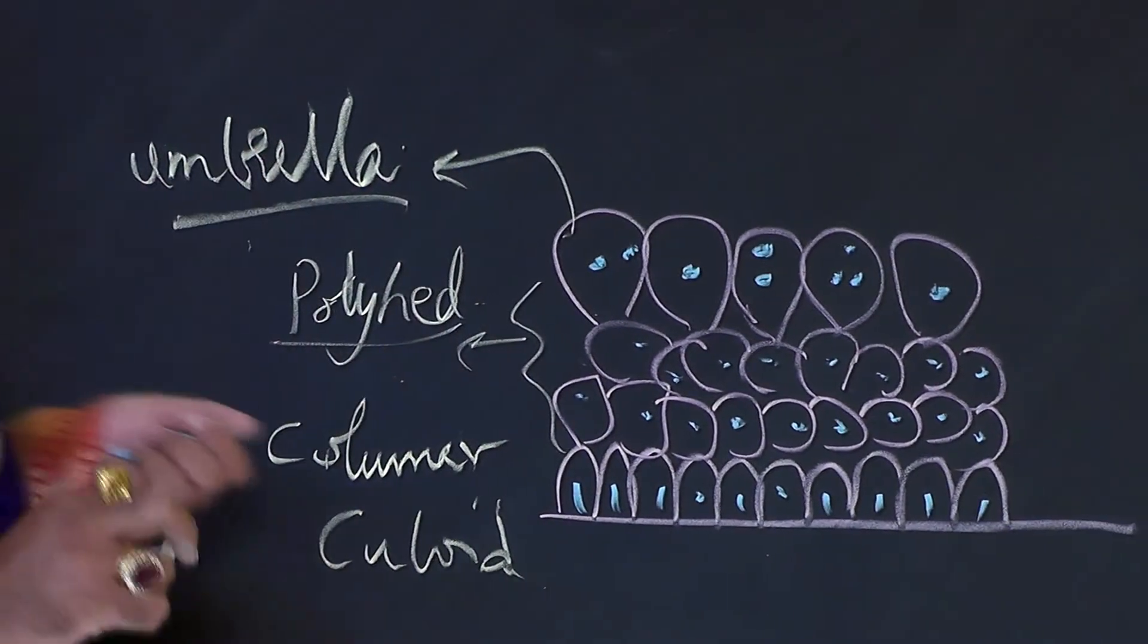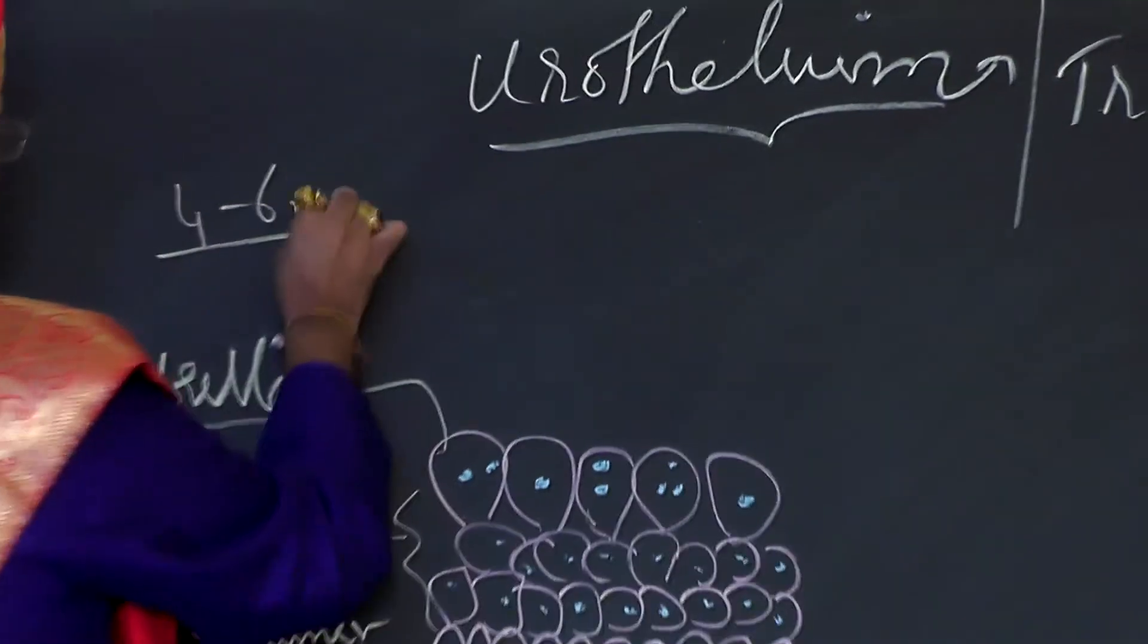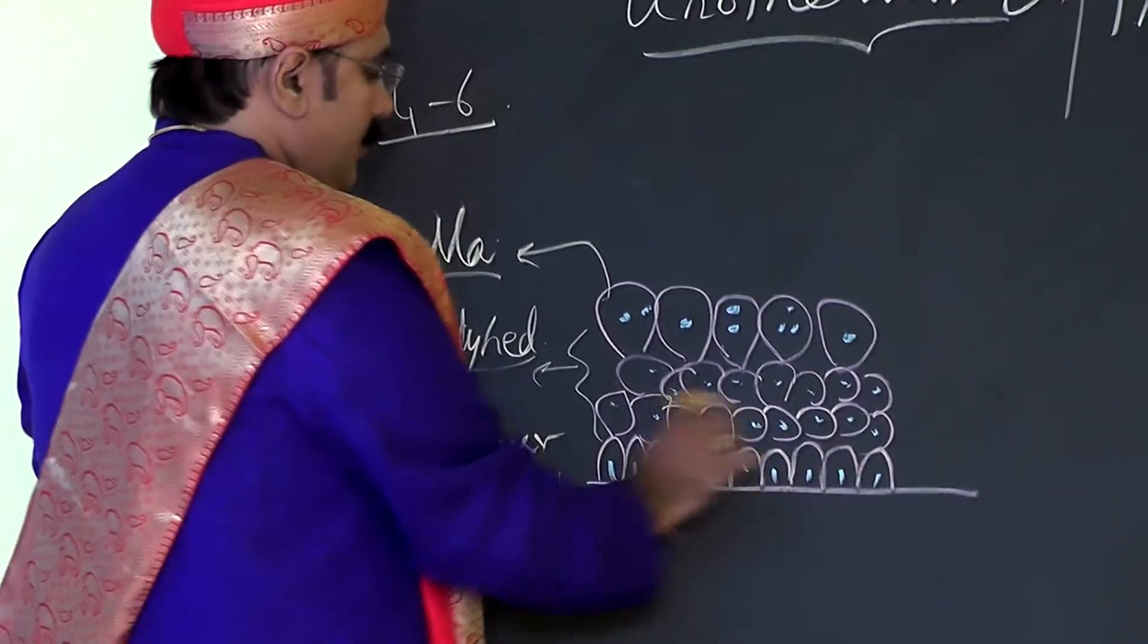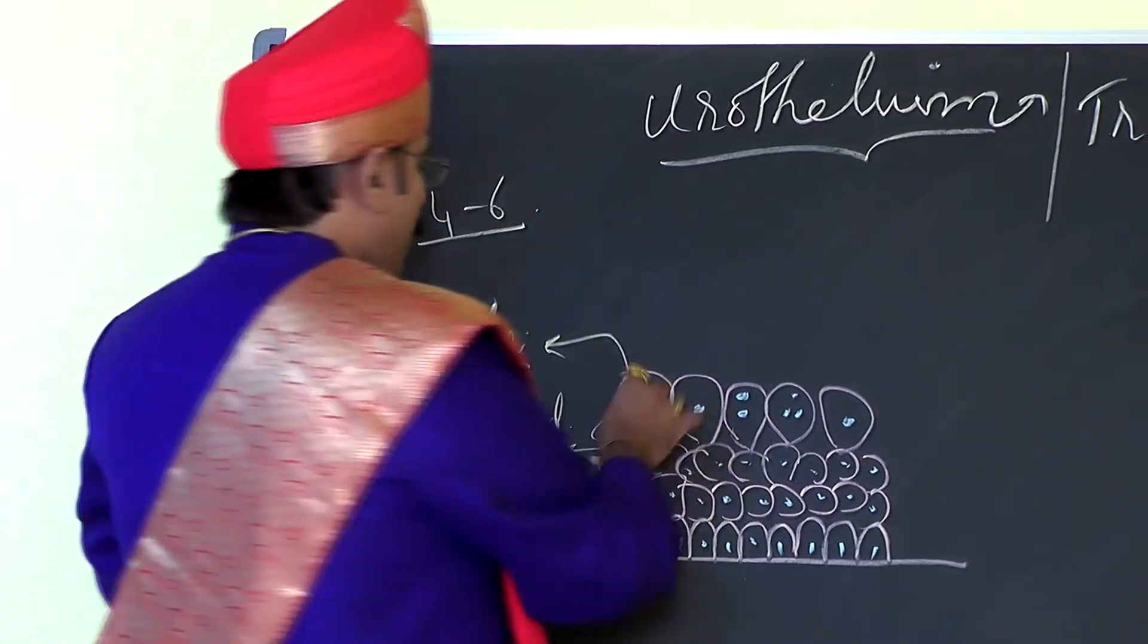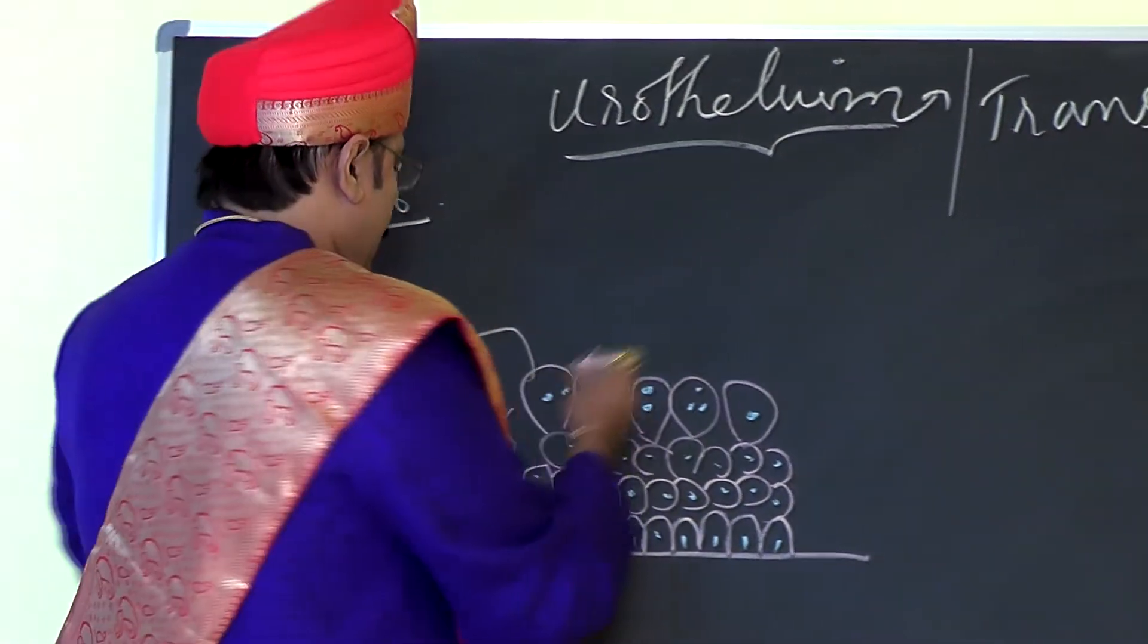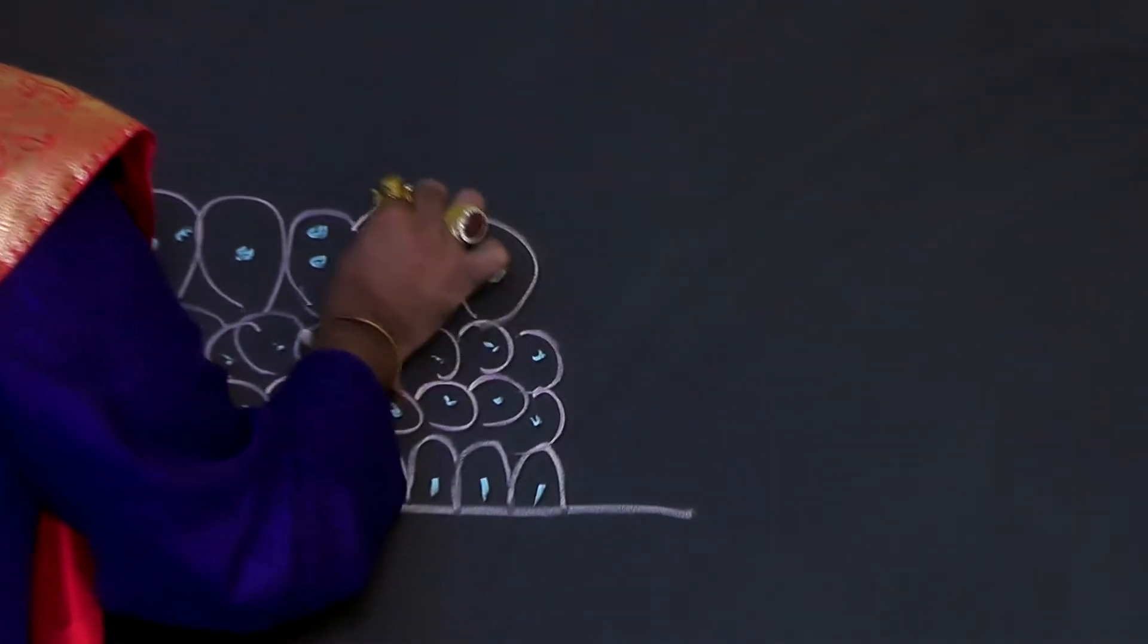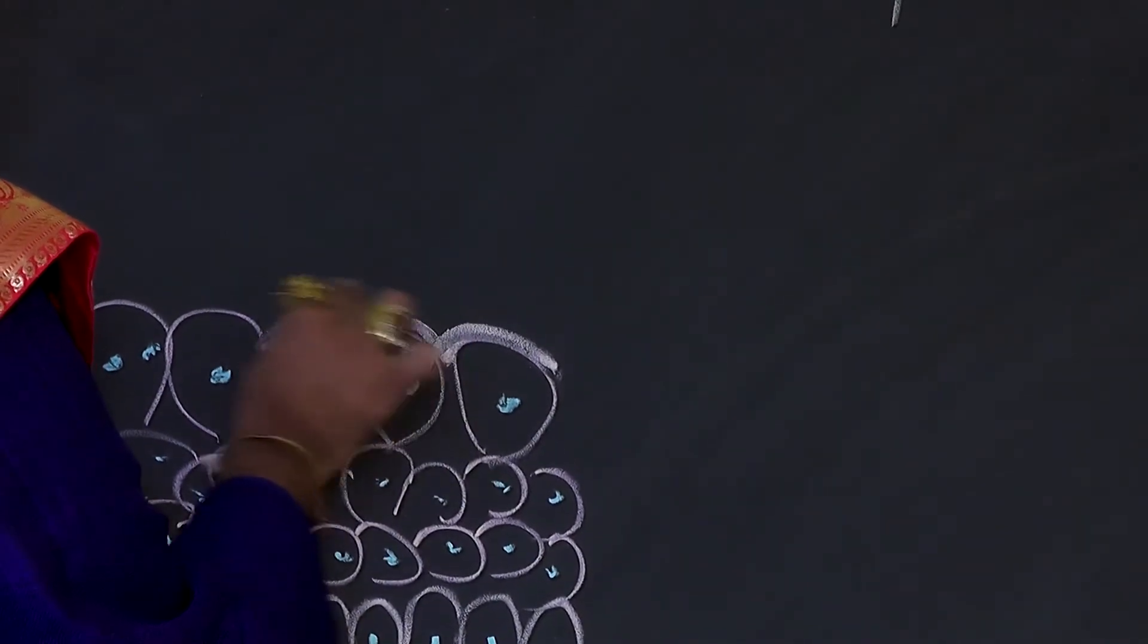So you have four to six layers of cells. Out of these, the basal cells are columnar with nucleus, then two layers of polygonal or polyhedral cells, and above them the umbrella-shaped cells. Please look at the board. These umbrella-shaped cells in their cell membrane have a special glycoprotein.